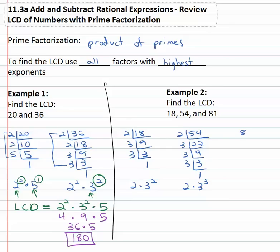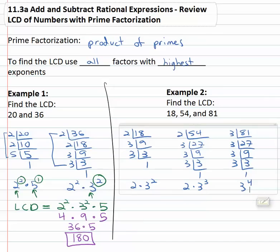Eighty-one is divisible by the prime number 3 twenty-seven times, which is divisible by 3 nine times, which is divisible by 3 three times, which is divisible by 3 once. So when we go through and find the prime factorizations of each number, we have: 2 times 3 squared, 2 times 3 cubed, and 3 to the fourth.